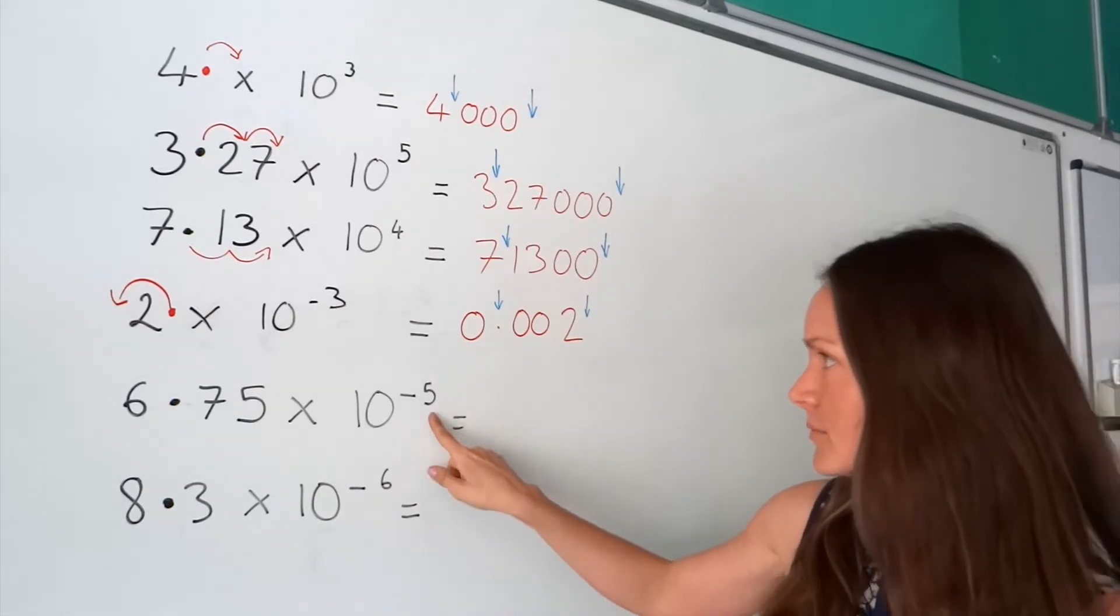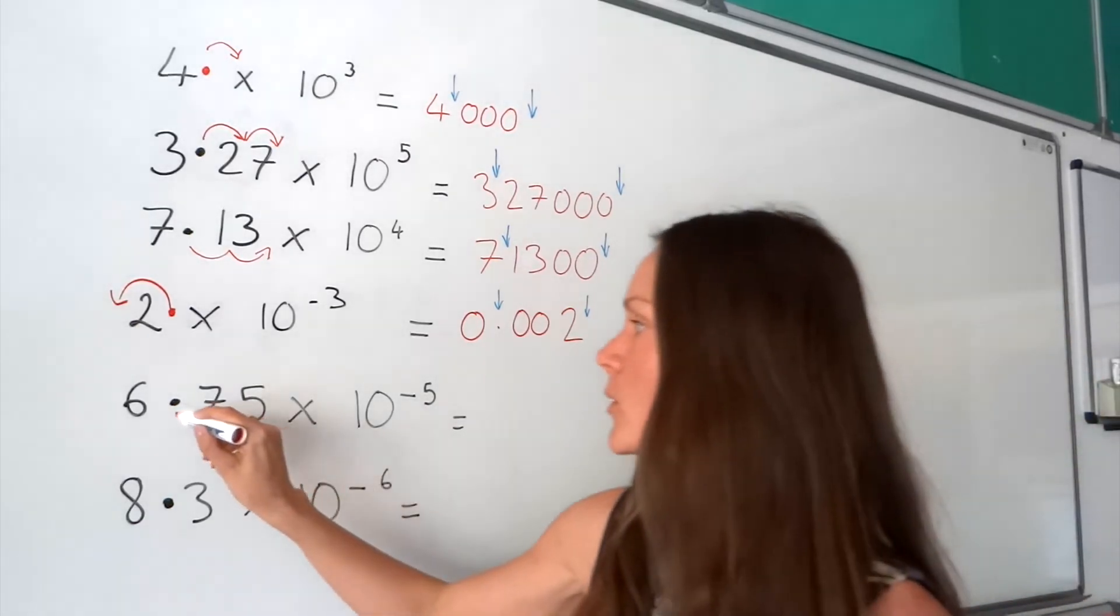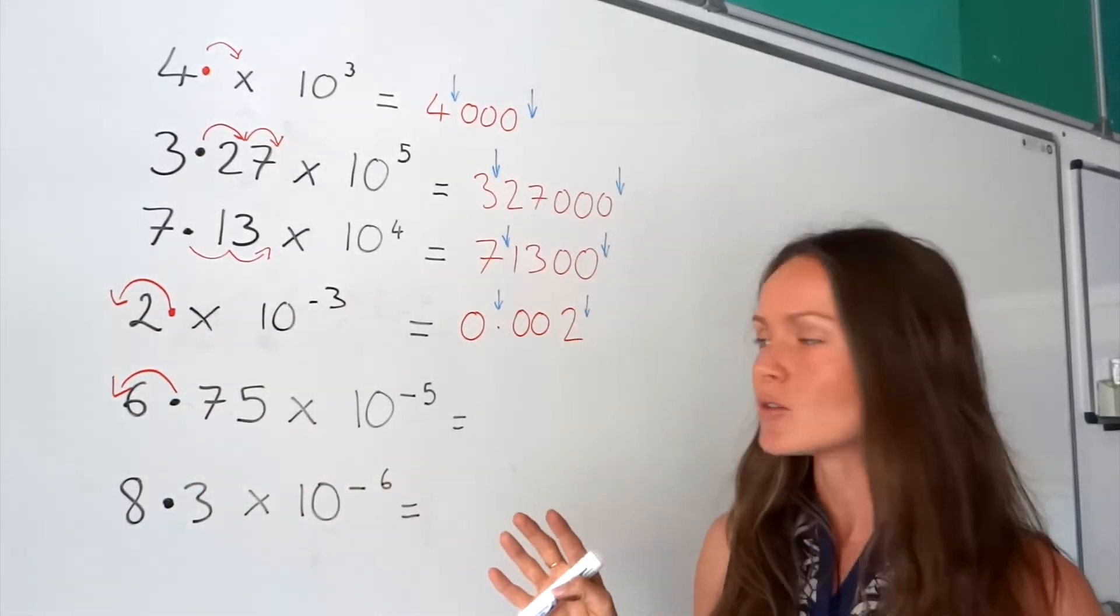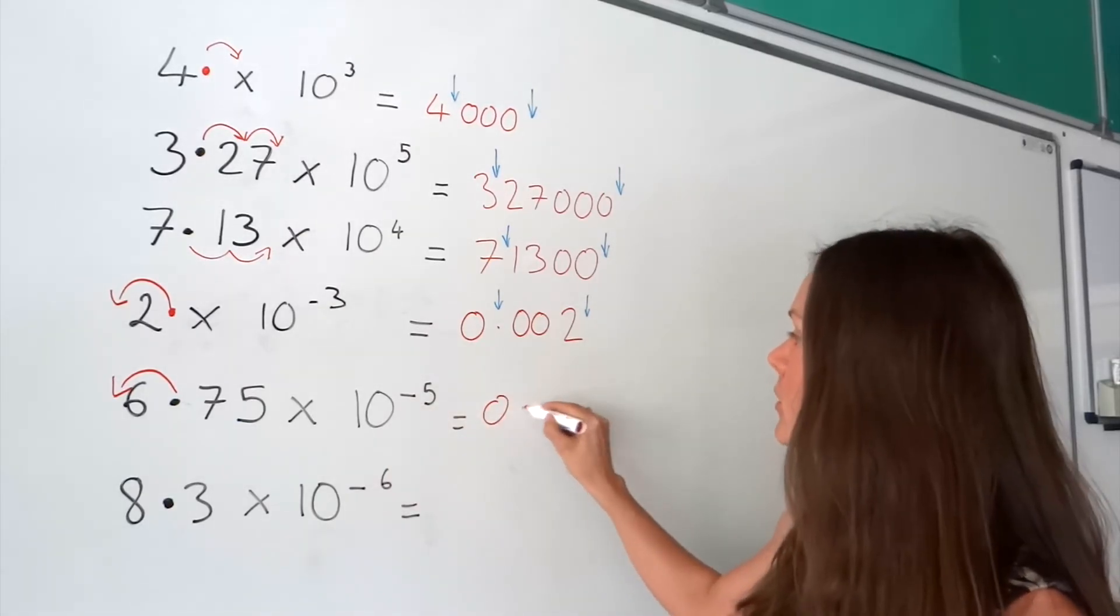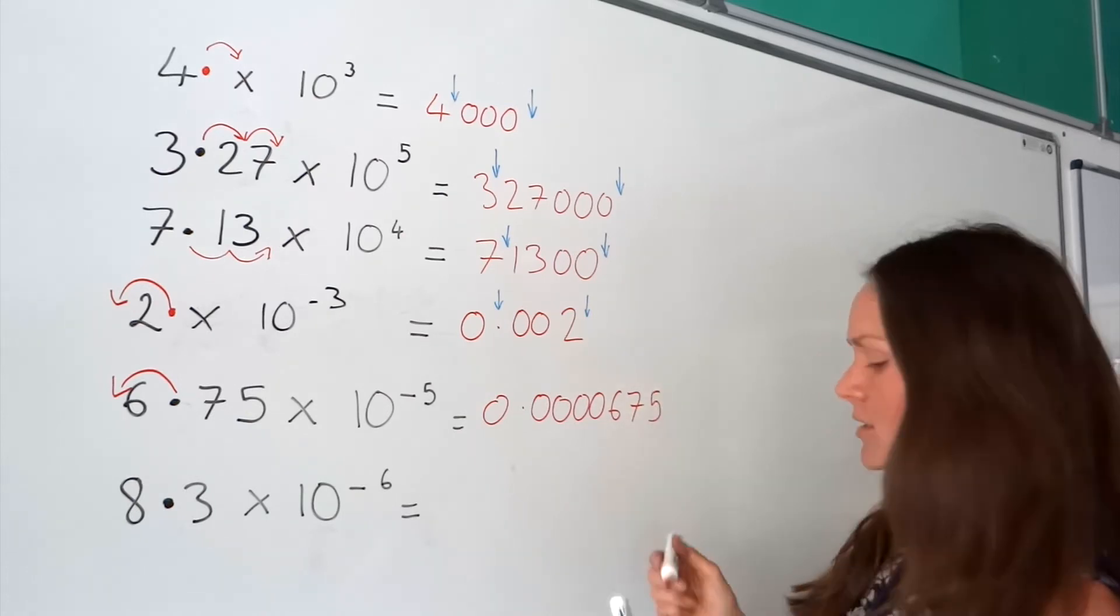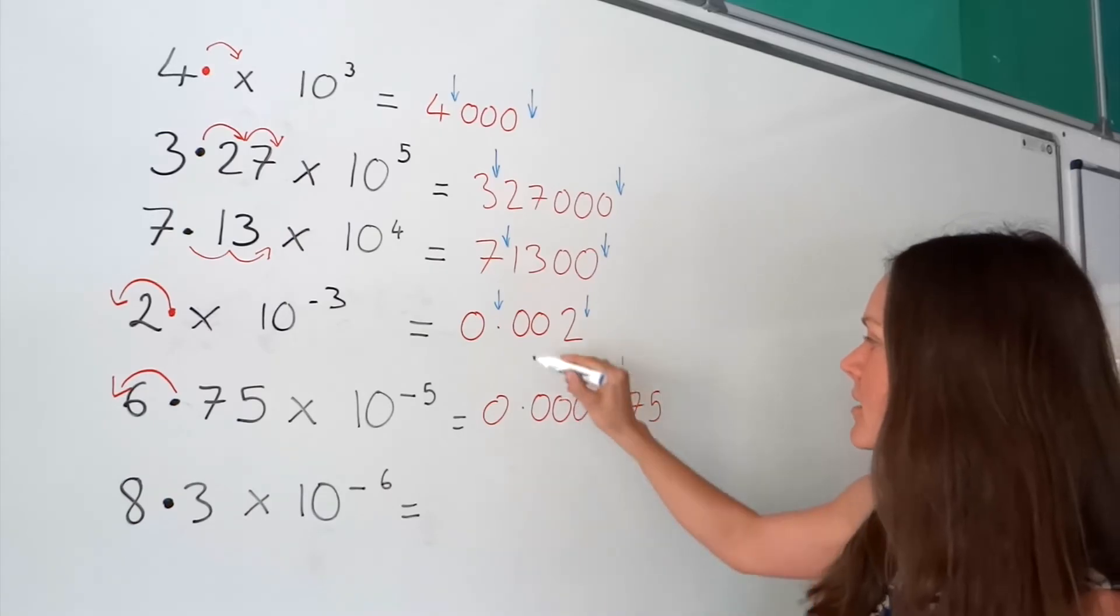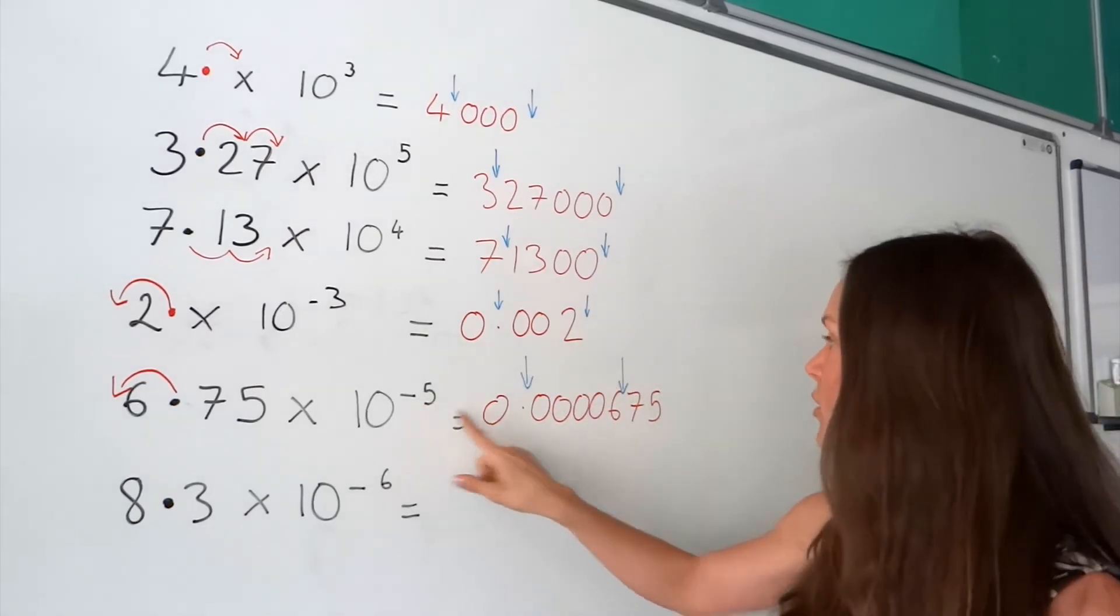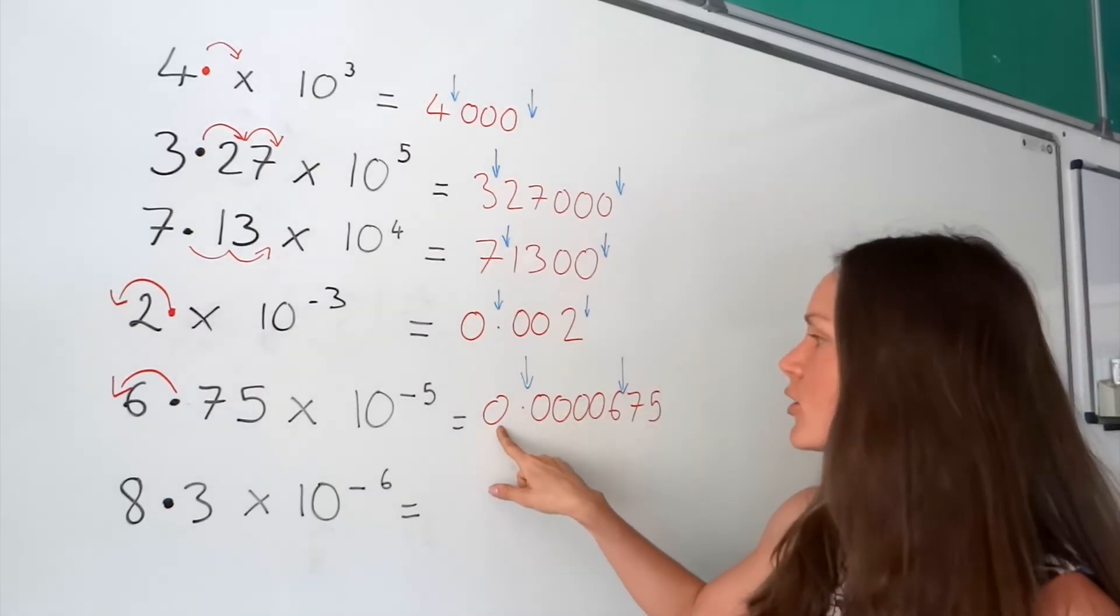Now, this one here. The decimal has to move five places. So, I'm going to move it one here. So, I need four more zeros for the decimal to move five places. I've got four zeros after the decimal. Then, I've got my 6, 7, 5. So, again, just keep checking. The decimal used to be there. Now, it's there. We should have five digits in between those arrows. And we do. And then, we just put a zero here, just to make it look nice and tidy.